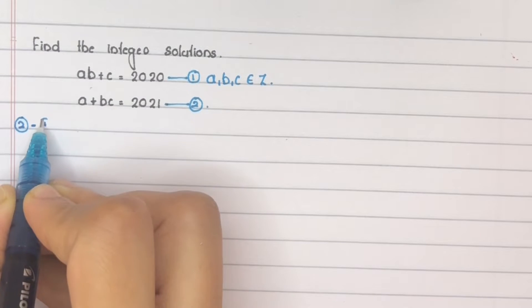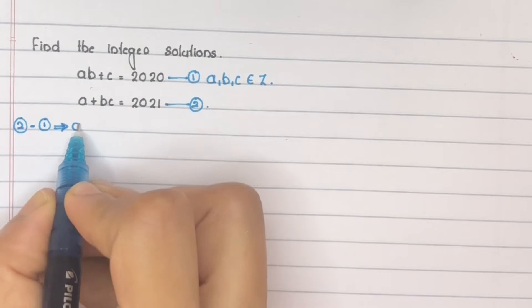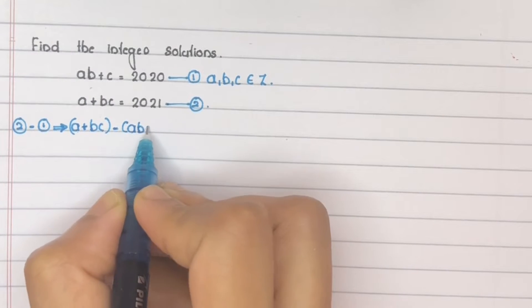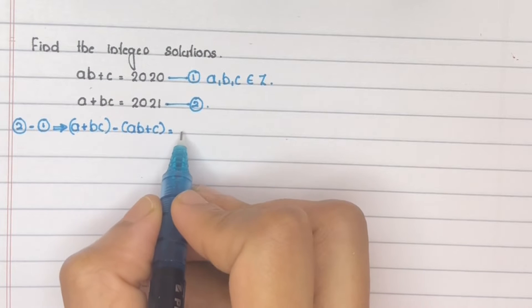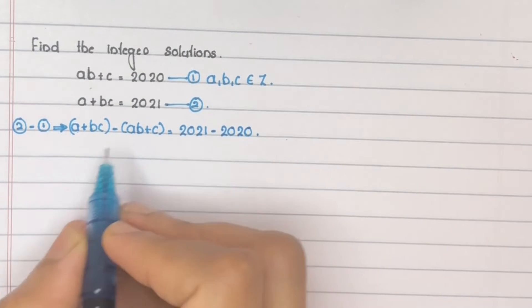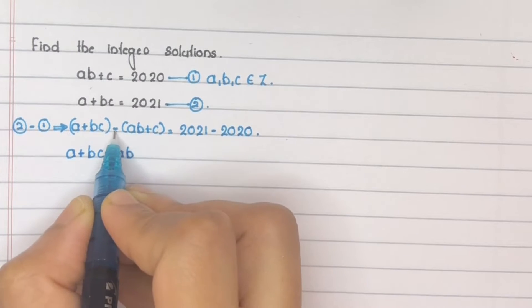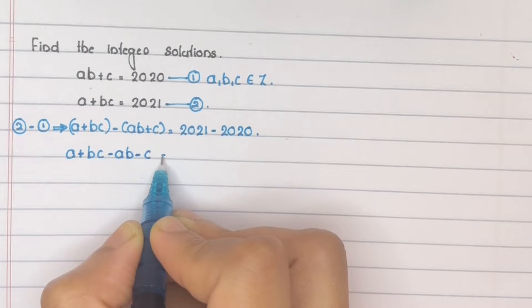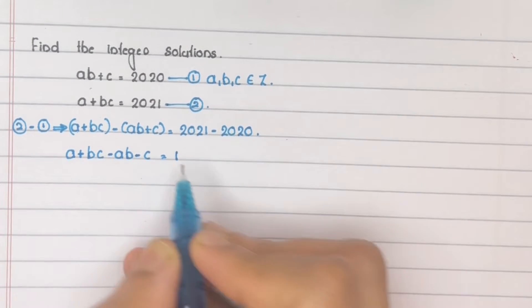Compute equation 2 minus equation 1. The left-hand side is A plus BC minus (AB plus C), which equals 2021 minus 2020. Opening the bracket: A plus BC minus AB minus C equals 1.